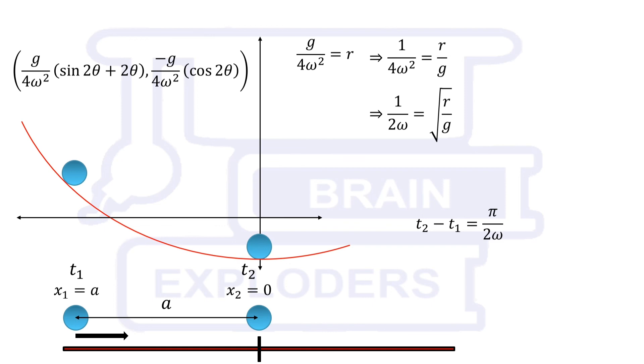Thus pi times square root r over g is the time taken by any object at rest to reach the lowermost point on this curve.